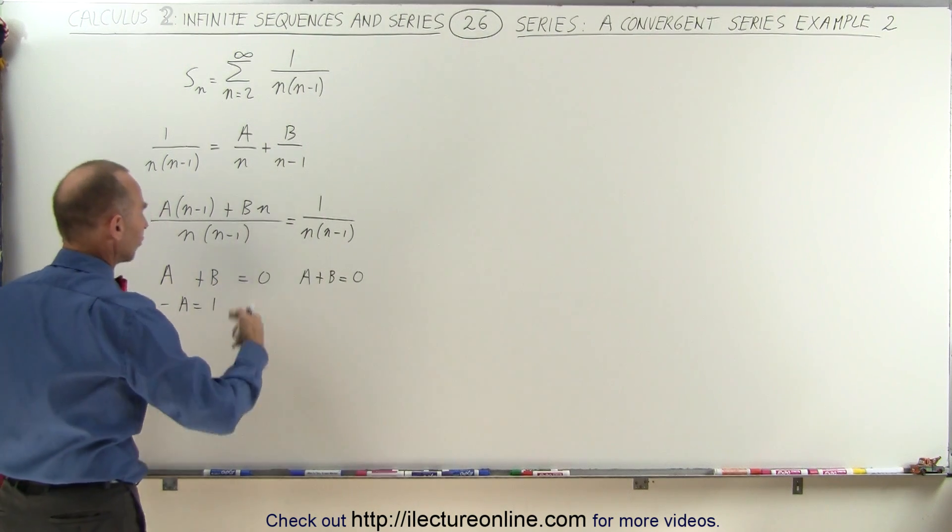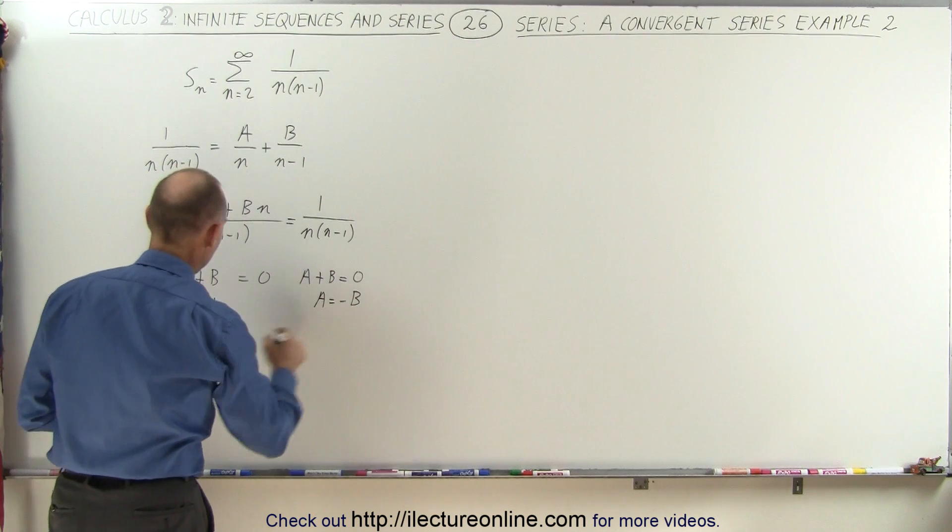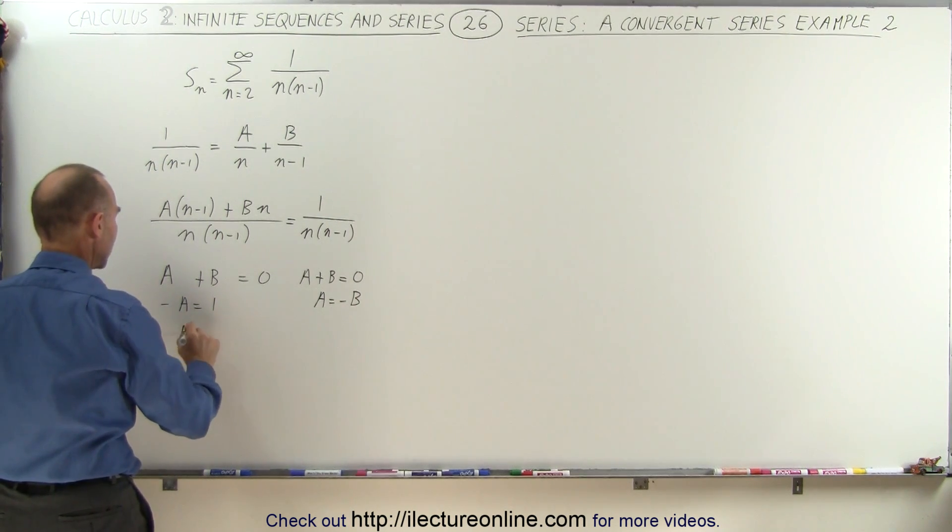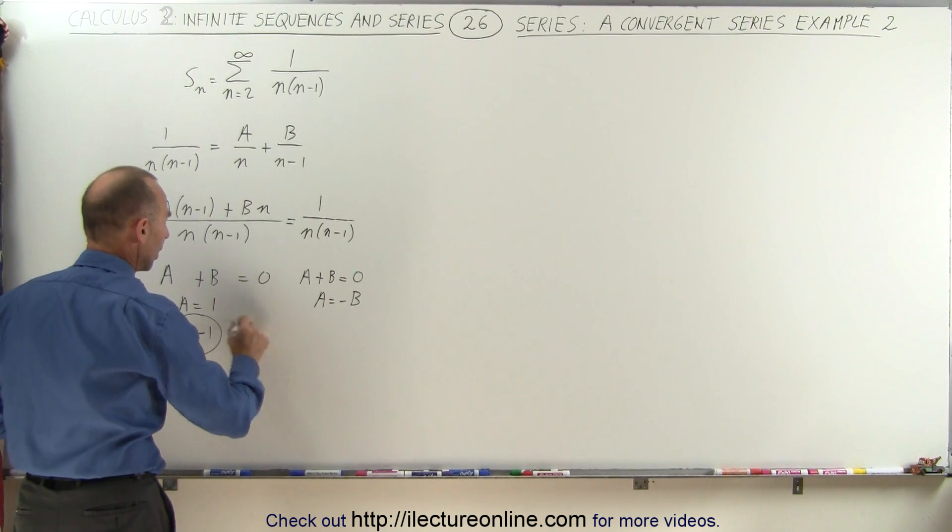Based upon this, a plus b is equal to 0, which means that a equals negative b. And over here, a is equal to negative 1, which means that b must equal 1.